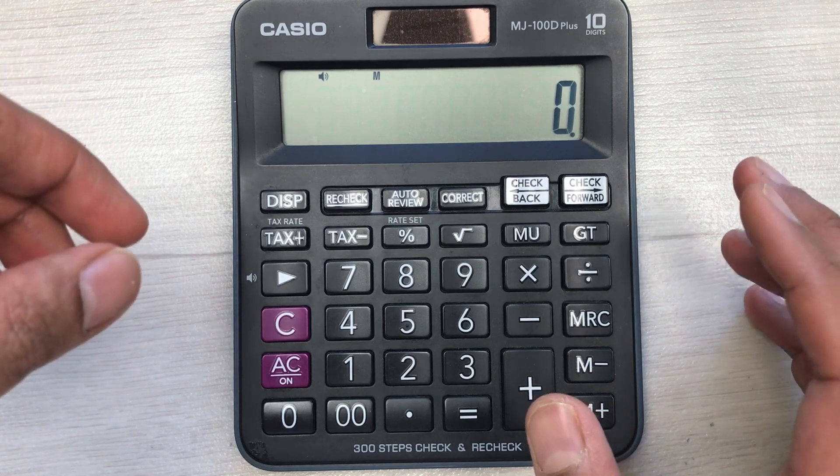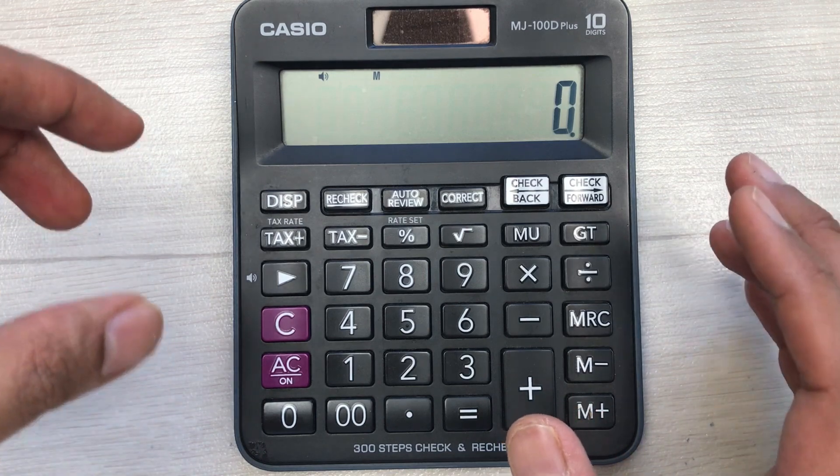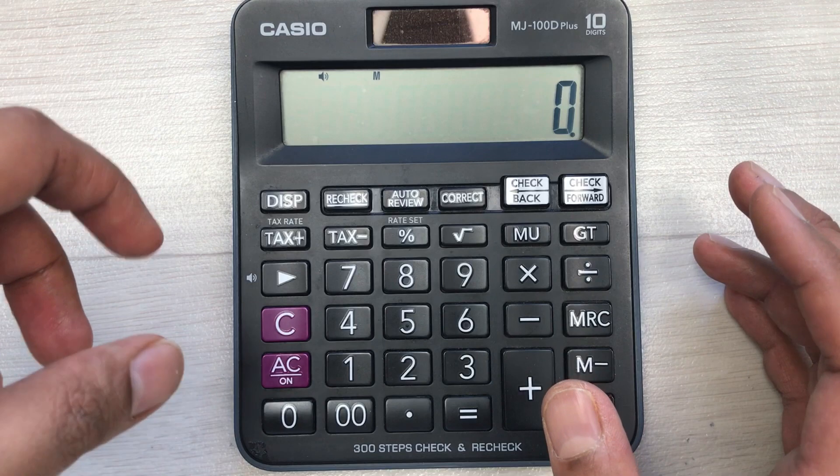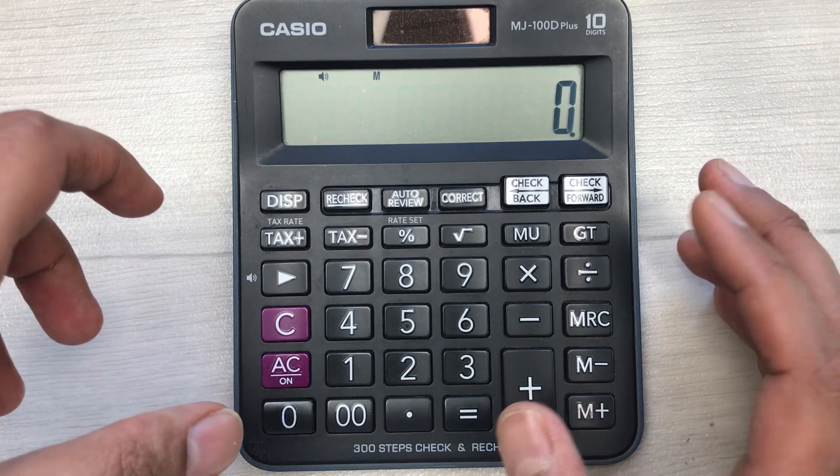For example, you have an item and the price of that item is 6920, and you want to find out what will be the final price after 75% discount.